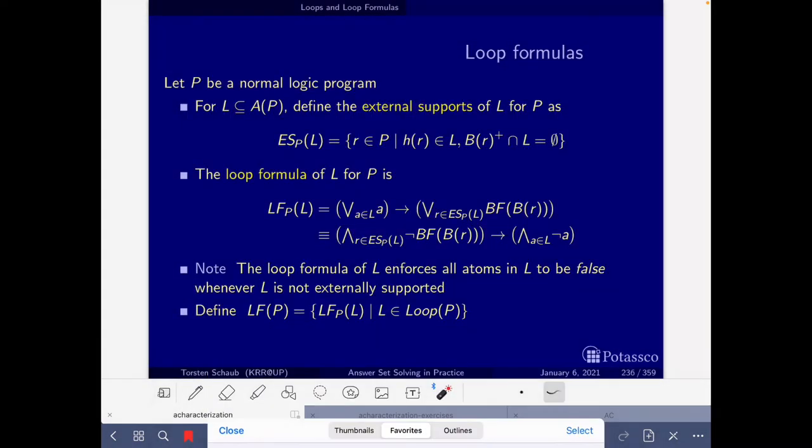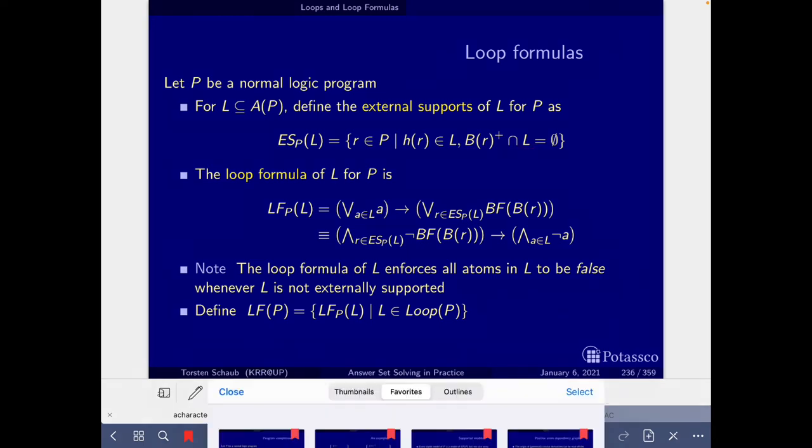And then here we have the definition of the loop formulas of the program. So for every loop that we have, we add this formula that is defined here, and this formula uses the external support. Basically it says that if one of the atoms in the set of atoms L holds, then one of the bodies of the rules of the external support must hold. The external support of a set of atoms is defined here, and this is simply the set of rules such that the head belongs to the set but the positive body has no element from the set L.